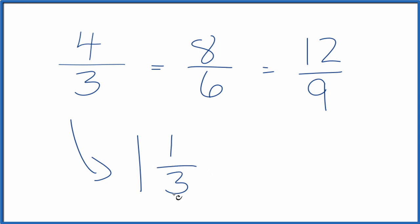You can check that. 1 times 3, that's 3, plus 1 is 4. Keep the denominator the same. 4 thirds.